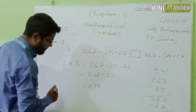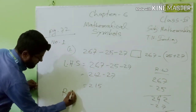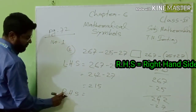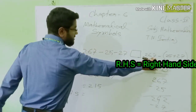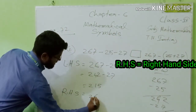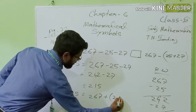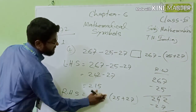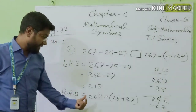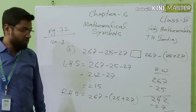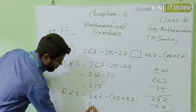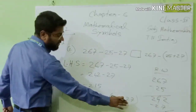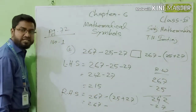Now, RHS — that means right hand side. This side is right hand side. The expression is 267 plus 25 minus 20 plus 27. Sorry, here will be minus. There is bracket work, so we need to do the bracket work first. 267 minus — we have to add this one; earlier we had done this part, but we are bound to do this part first because there is a bracket.